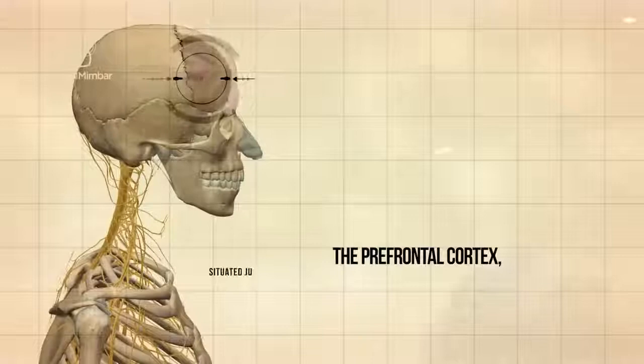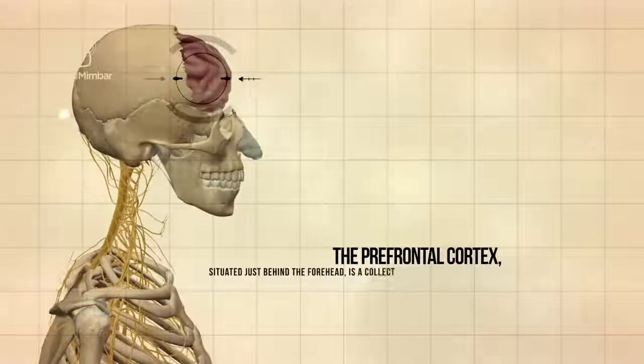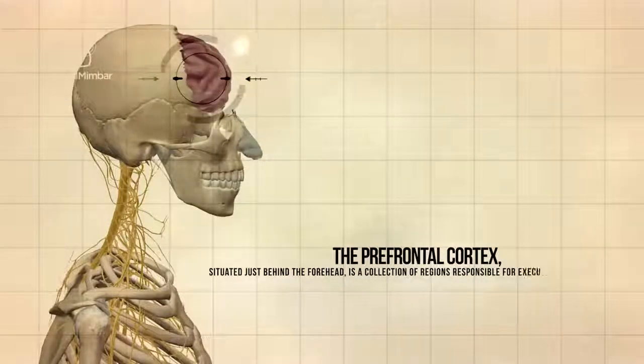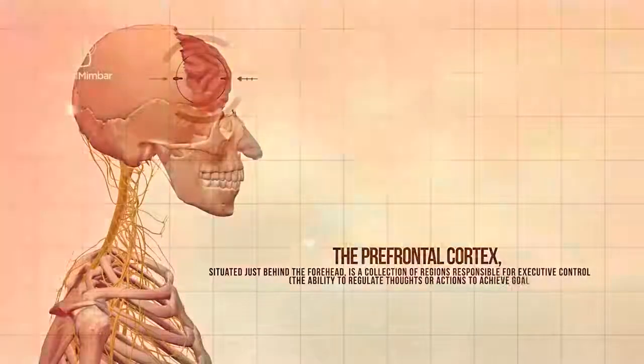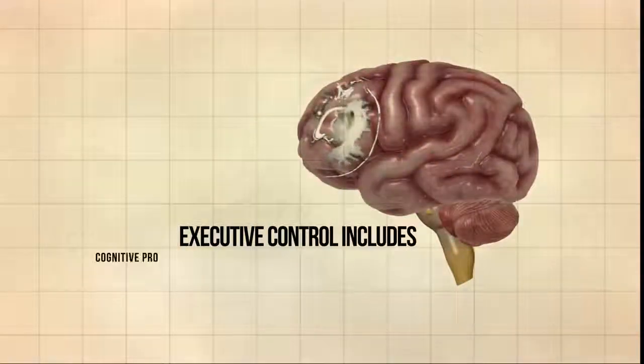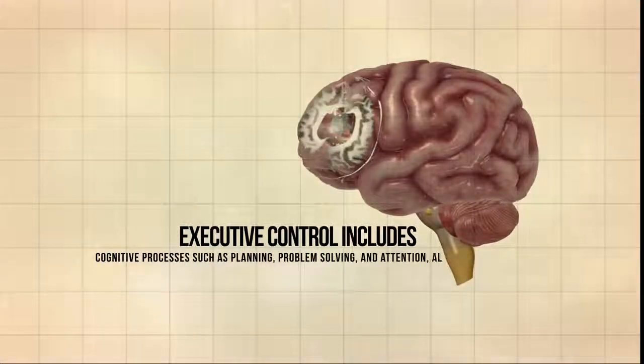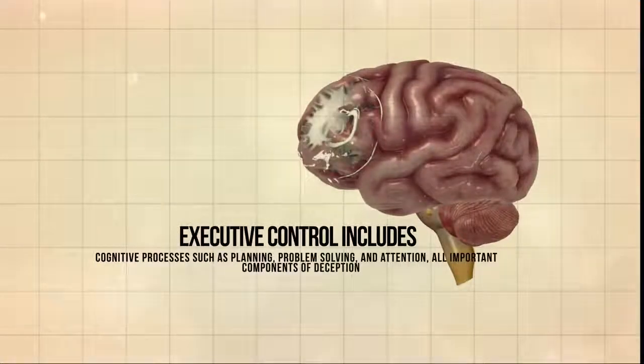The prefrontal cortex, situated just behind the forehead, is a collection of regions responsible for executive control, the ability to regulate thoughts or actions to achieve goals. Executive control includes cognitive processes such as planning, problem solving, and attention, all important components of deception.